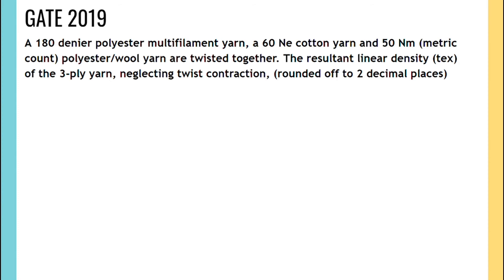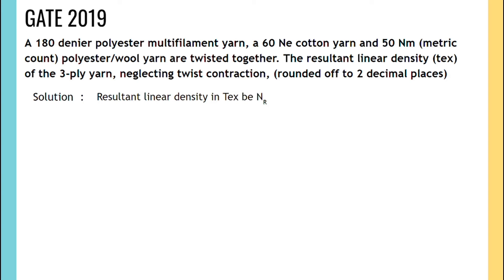The next problem: a 180 Denier polyester multifilament yarn, a 60 Ne cotton yarn, and a 50 Nm polyester-wool yarn are twisted together. The resultant yarn linear density in Tex of the 3-ply yarn is asked. The solution: let the resultant yarn linear density in Tex be Nr. We know that Tex is a